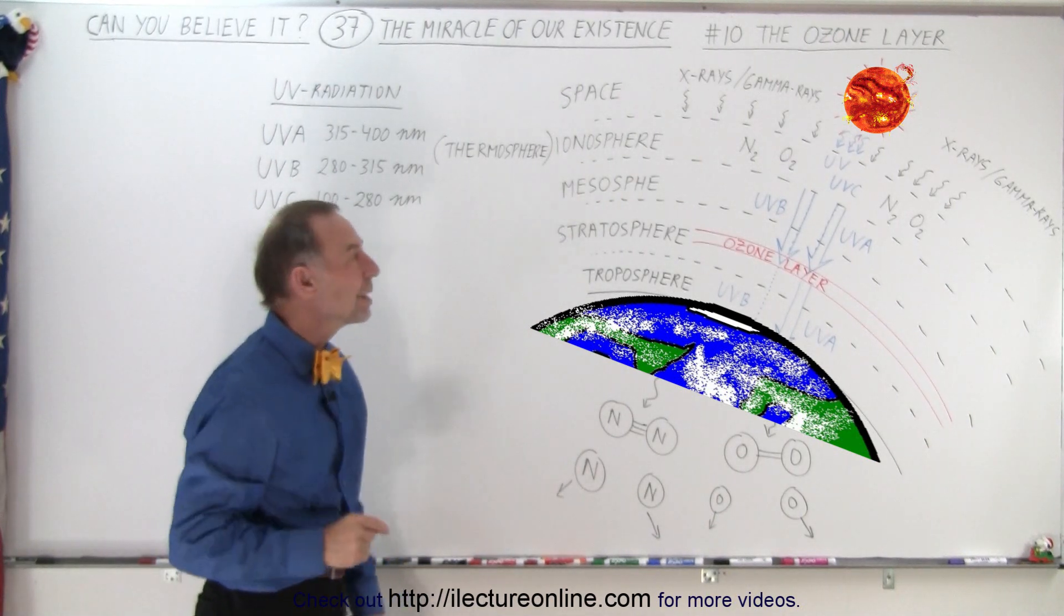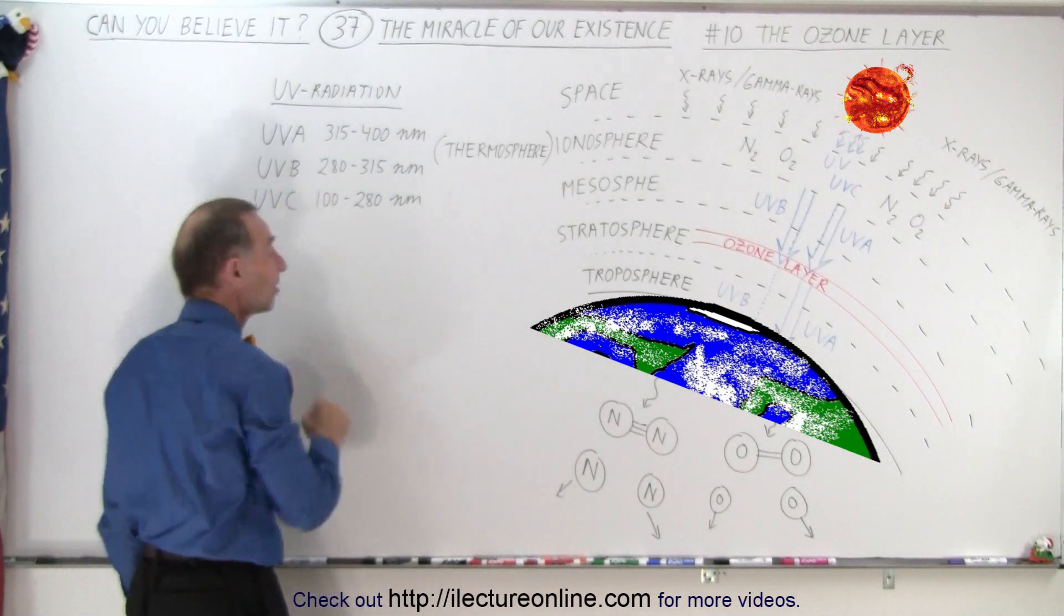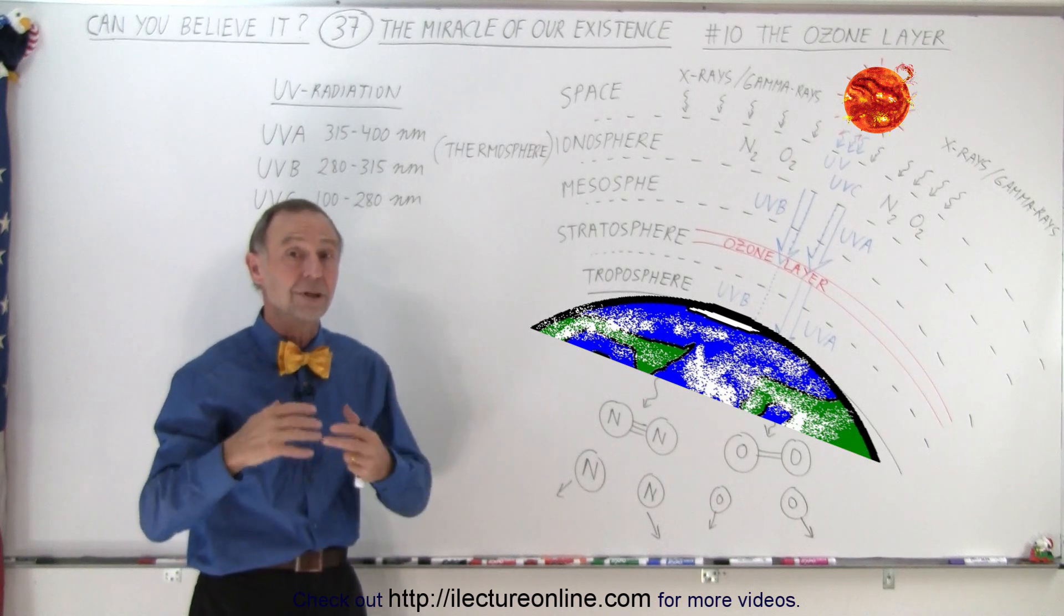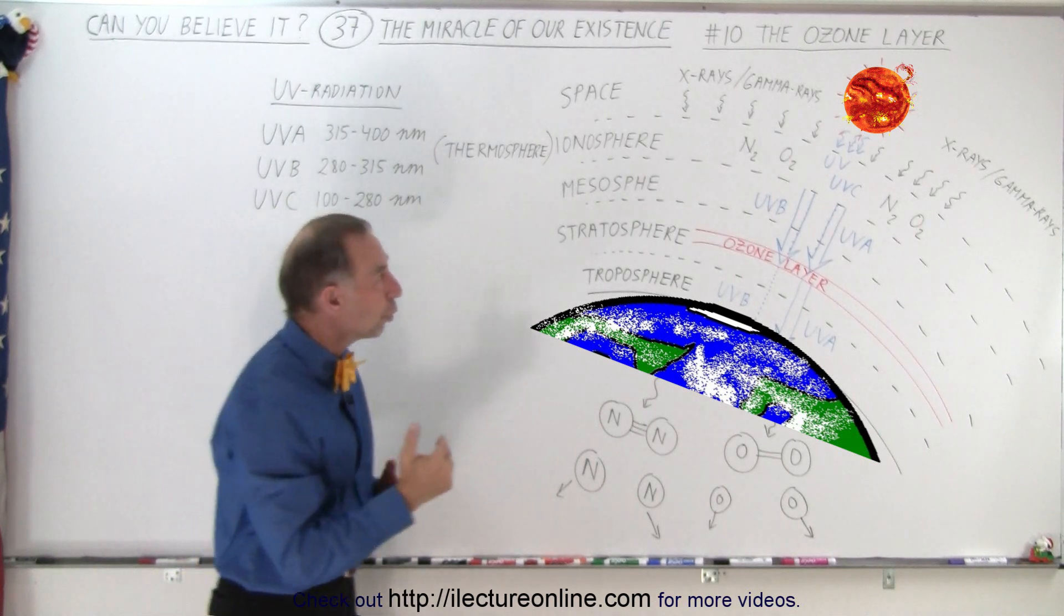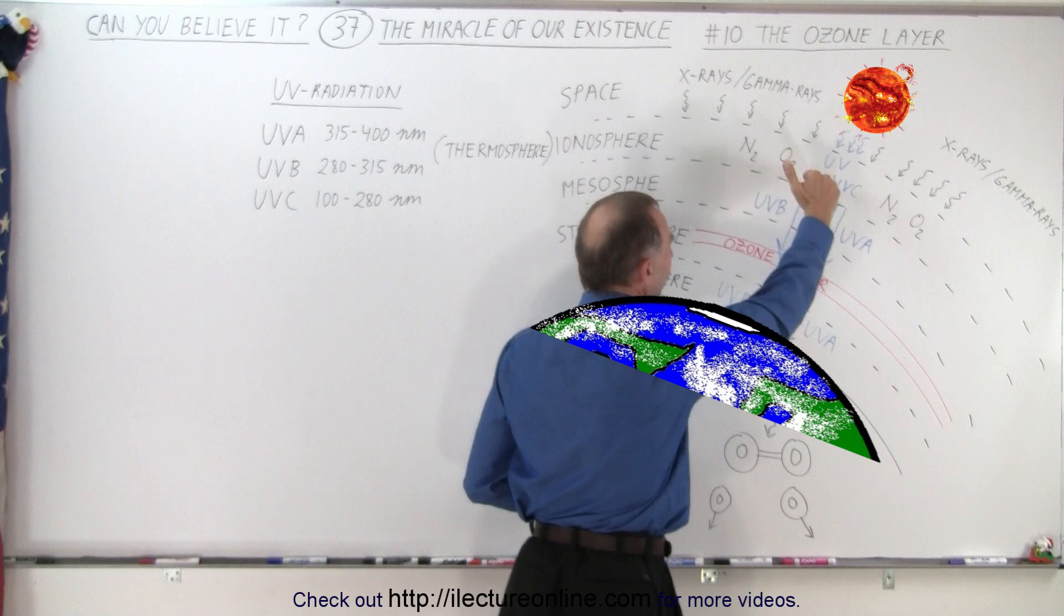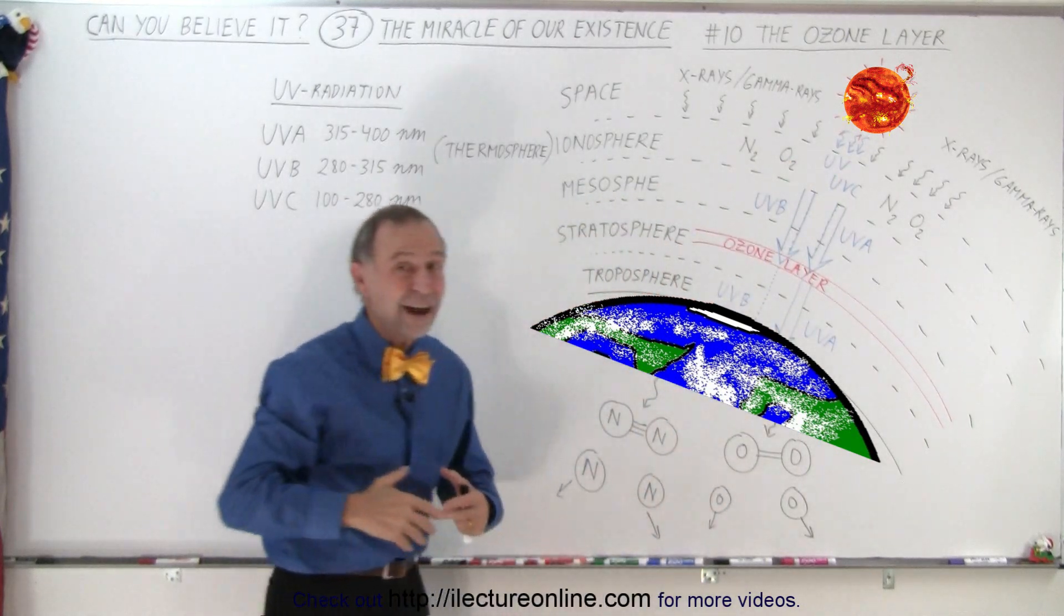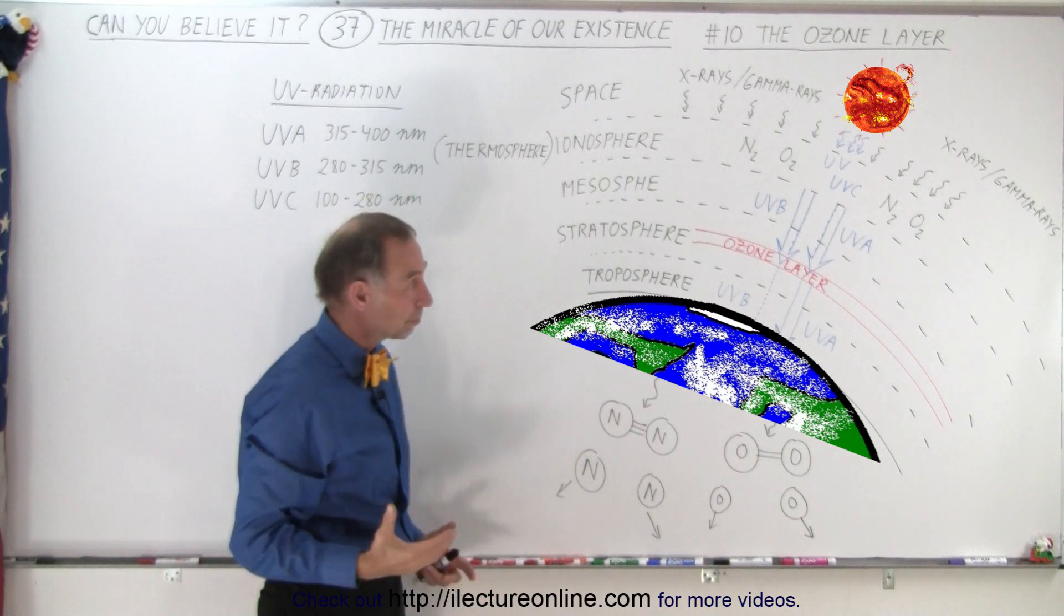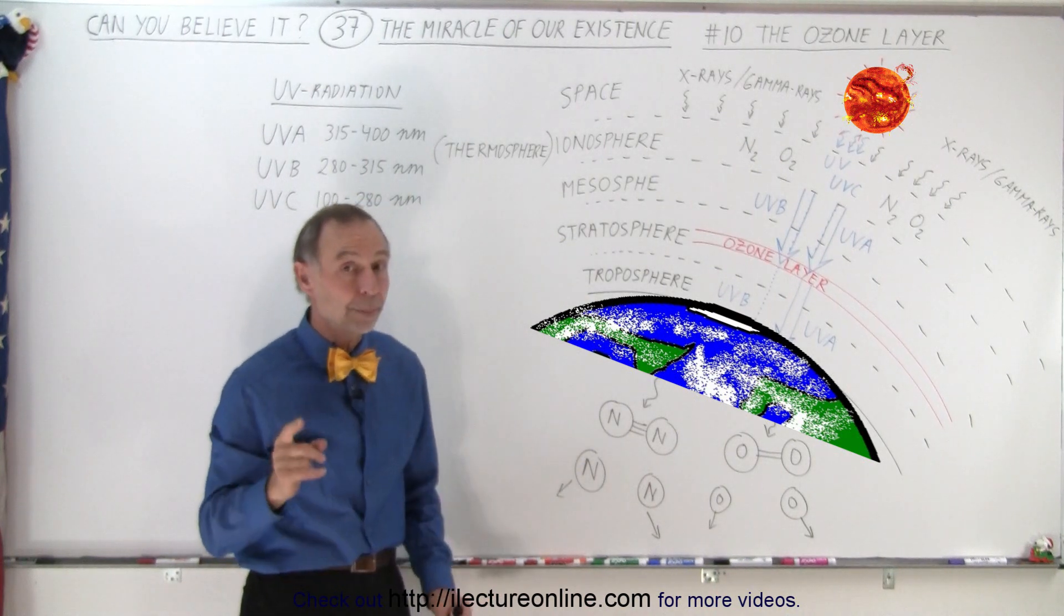What about UVB? UVB is not quite as energetic as UVC, but still plenty energetic to cause a significant amount of damage. If all the UVB radiation were able to get to the surface, just five minutes in the sun would cause severe sunburns. Luckily, we're protected.